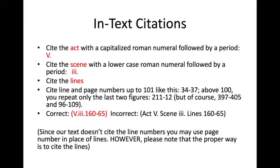Let's talk about the in-text citations themselves — how are they supposed to look? You can see my correct example on the fifth bullet. First, when you cite the act, you're going to use a capitalized Roman numeral followed by a period. So if I'm quoting from Act 5 of Othello, I'm going to use a capital V with a period after it.